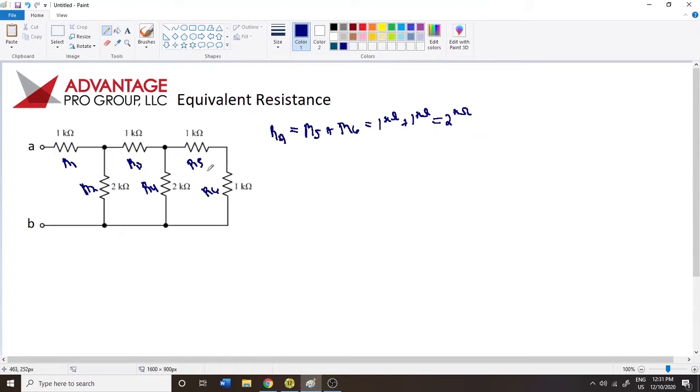So we have RA. Now we can redraw the circuit again. I want to remove all of this stuff, and I want to replace it with R sub A. So we erase all of this stuff, and we put our resistor, which is 2K, and its name is RA. So our circuit got a little bit simpler.